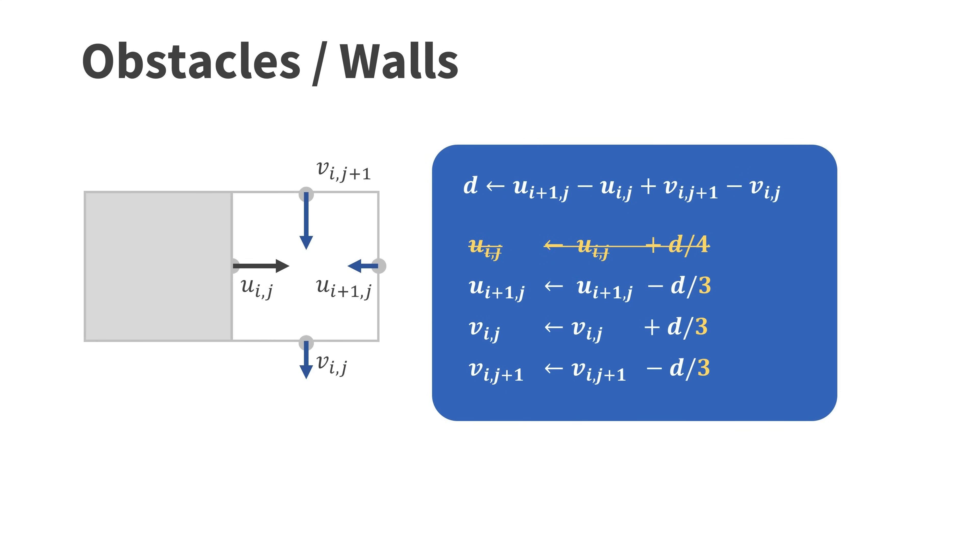Handling obstacles and walls is very simple too. Let's assume there is an obstacle or wall on the left of cell ij. Now the velocity uij is fixed so we can only modify the remaining three velocities to make the divergence zero. This time we use one third of the divergence as a correction. Typically for a wall uij is zero. It can also be non-zero for instance if an object is moving.